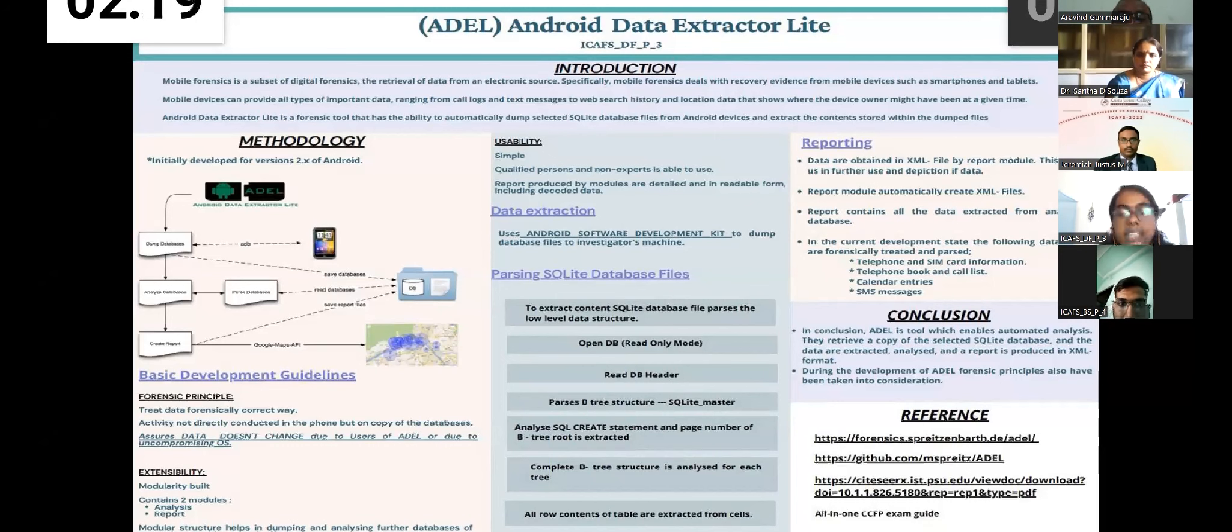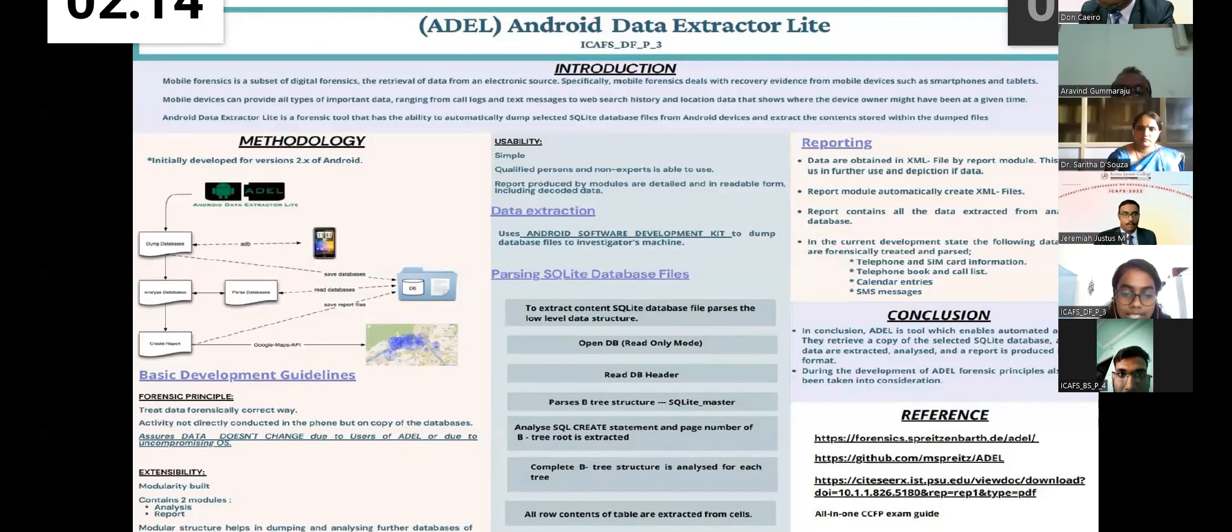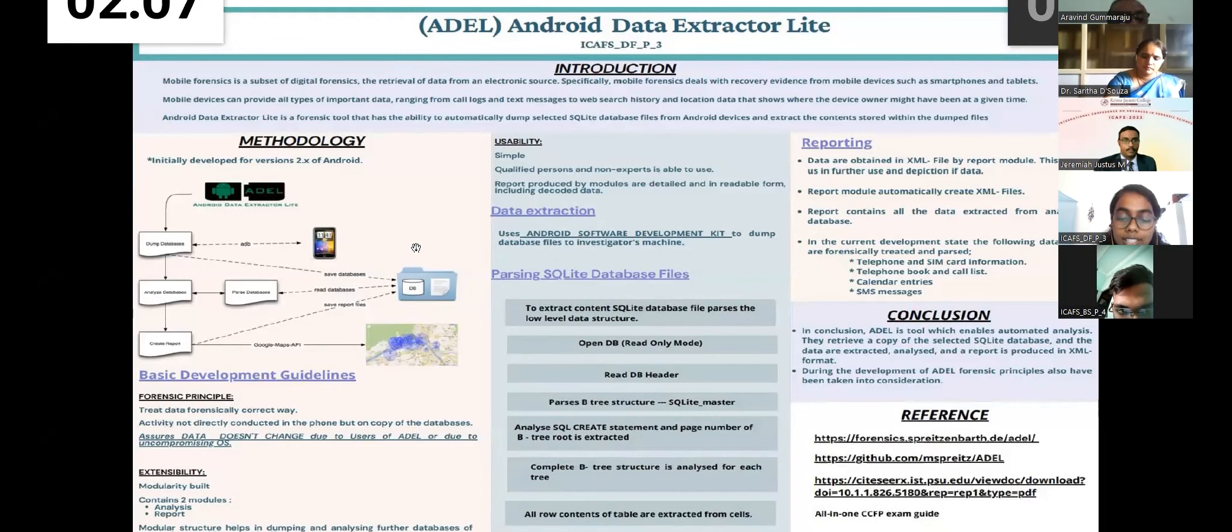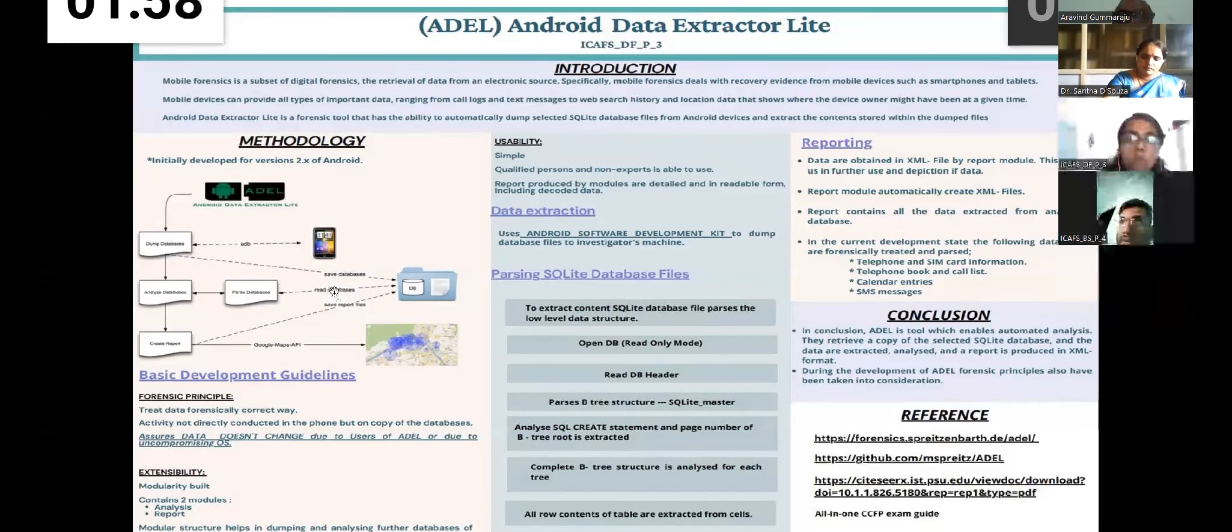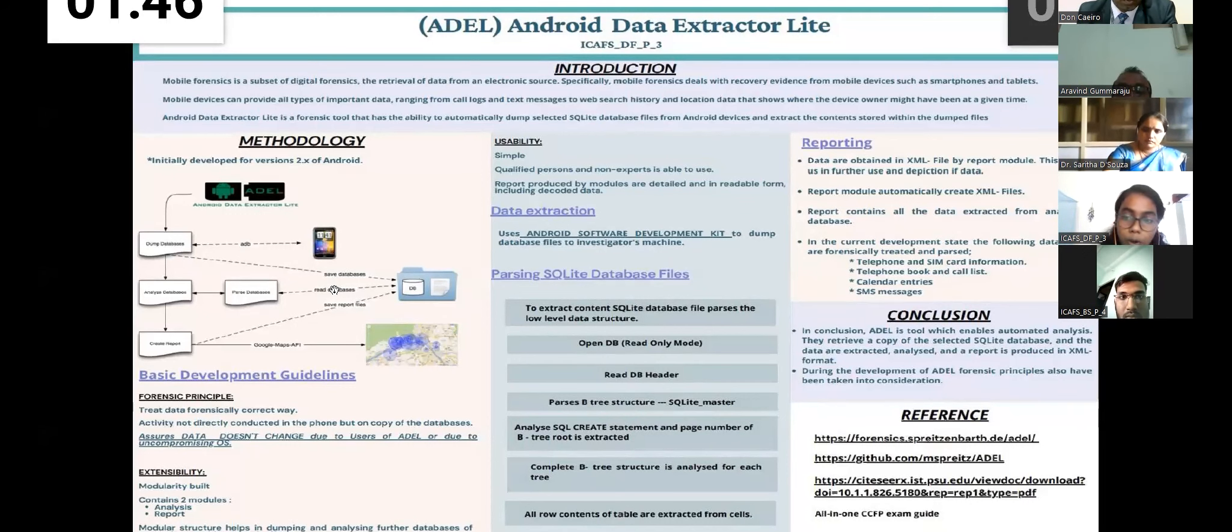They open this database in a read-only mode and read the header where they get the basic information about it. On analyzing the header, they analyze the SQL master where they are able to understand the contents in it. After the entire completion of the B-tree structure, they are able to get the entire details which are under the table. And coming to the reporting part, it basically talks about in which form the data is being obtained.